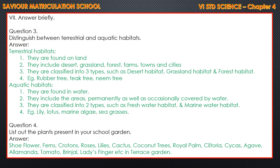Fourth question: List out the plants present in your school garden. Answer: Show flower, ferns, crotons, roses, lilies, cactus, coconut trees, royal palm, clitorium, cycas, agave, allamanda, tomato, brinjal, lady's finger, etc., in the terrace garden.